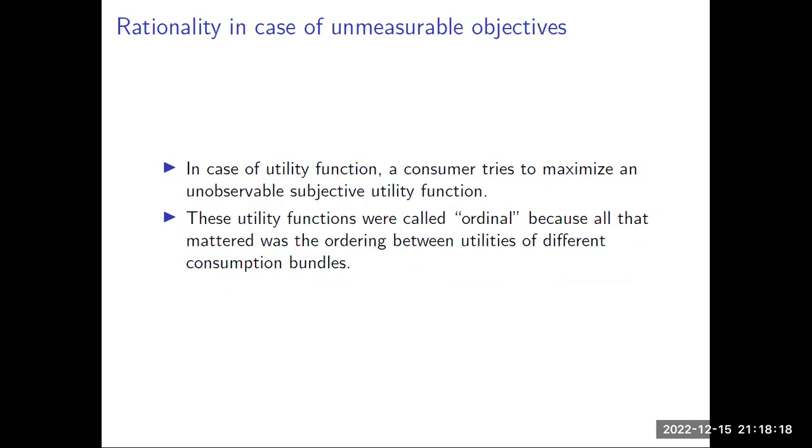Rationality can also be sometimes unmeasurable. For example, in the case of utility functions, a consumer tries to maximize an unobservable subjective utility function. These utility functions were called ordinal because all that mattered was ordering between the utilities of different consumption bundles.